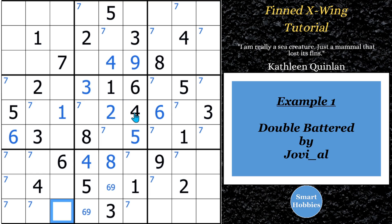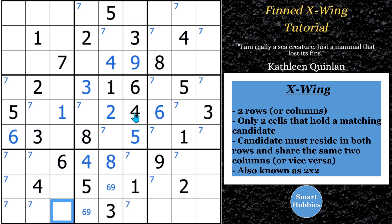In order to understand what a Finned X-Wing is, you also have to first understand what an X-Wing is, and I have a tutorial on that — I'll put a link at the end of this. But basically, an X-Wing is when you have two of a particular candidate in the same two spaces — the same two spots in any particular rows or columns. To explain it a little better, let's use this example here.